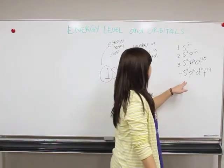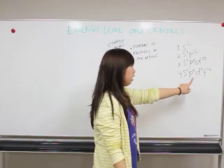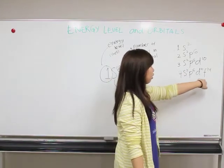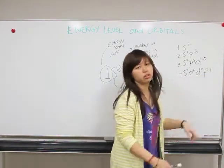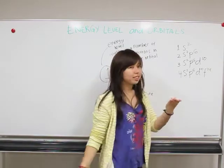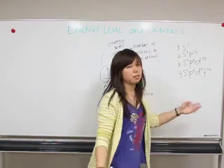And the last one is the fourth energy level. The fourth energy level has one S orbital, three P orbitals, five D orbitals, and seven F orbitals. Seven F orbitals have 14 electrons in total. So in the fourth energy level, there are 32 electrons in maximum.